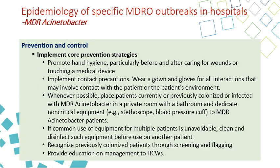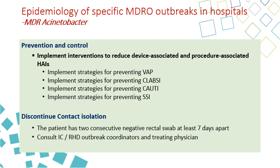Prevention of MDR Acinetobacter includes contact transmission measures: hand hygiene, contact precautions, private room with private bathroom whenever possible, and dedicated non-critical equipment. If common use equipment is unavoidable, clean and disinfect between patients, recognize previously colonized patients by flagging in the system, and provide education for healthcare workers. Preventive measures also include bundles for VAP, CLABSI, CAUTI, and SSI. We can discontinue contact isolation for MDR Acinetobacter when we have two consecutive negative rectal swabs seven days apart.